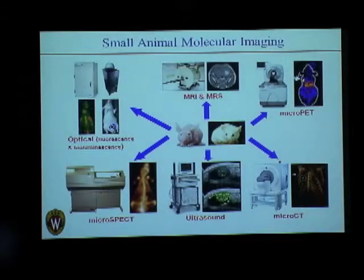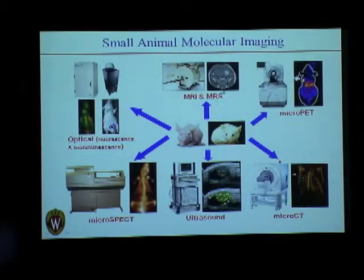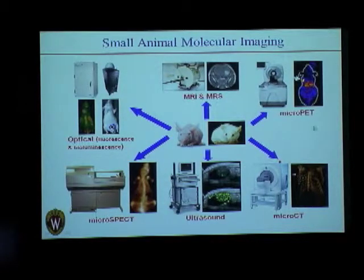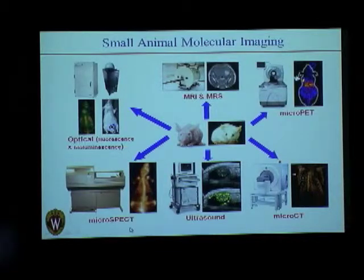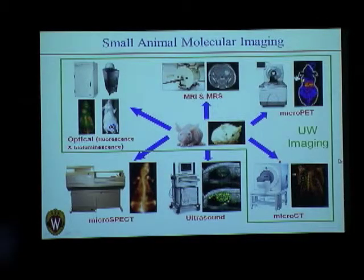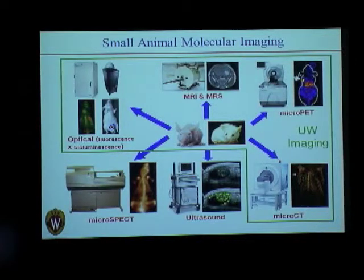These are some of the small animal molecular imaging modalities available, which include optical imaging, MRI, PET, CT (computed tomography), ultrasound imaging, and SPECT. The University of Wisconsin has four out of these six modalities being used for research.